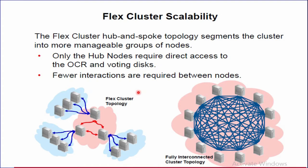This is important because contention for the voting disk can lead to nodes being ejected from a cluster. The second effect is there are fewer interactions required between nodes in the cluster, resulting in less administrative network traffic such as heartbeat exchange between nodes. As shown in the diagram on this slide, the 12-node Flex Cluster on the left contains 12 interaction paths, while the fully interconnected 12-node cluster on the right contains 66 possible interaction paths. For a 1000-node cluster, the difference would be far more noticeable. Assuming 40 Hub Nodes with 24 Leaf Nodes per Hub Node, a Flex Cluster contains 1,740 possible interaction paths.